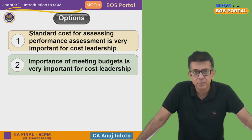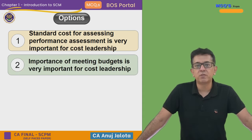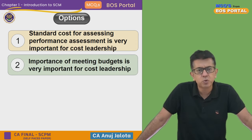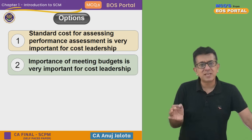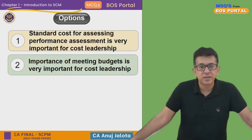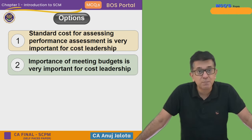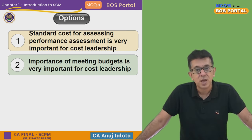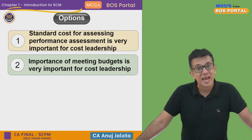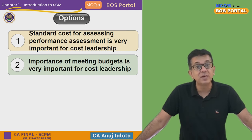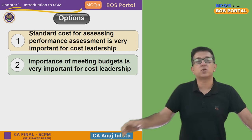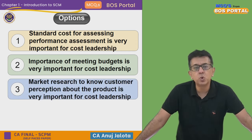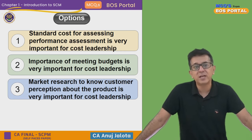Second option: importance of meeting budgets is very important for cost leadership. Budgets are estimates for a future period — they tell you what we would like to achieve. It is important to meet the budgets, at least as far as cost goes, because if you do not meet them, your actual cost will be higher than the budgeted cost, and that will dislocate you from the position of cost leadership. Second option is correct.